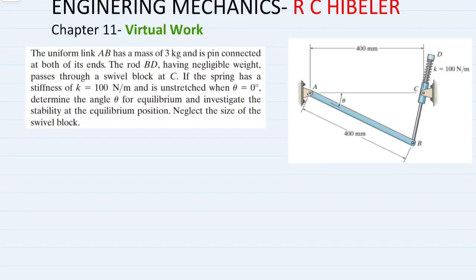This is an important problem of virtual work, where a rod AB is in the given configuration. The mass of the rod AB is 3 kilograms, meaning there is a force acting in the downward direction due to gravity, that is mg. At the same time, there is a spring of stiffness 100 Newton per meter with an initial compression, and the system is in static equilibrium.